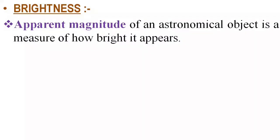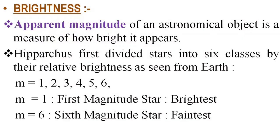A star might look bright because it is closer to us, and a really brighter star might appear faint because it is too far. We can estimate the apparent brightness of astronomical objects easily. But if we want to measure their real or intrinsic brightness, we must take their distance into account. The apparent brightness of a star is defined in terms of what is called the apparent magnitude of a star. In the second century BC, the Greek astronomer Hipparchus was the first to catalog stars visible to the naked eye. He divided stars into six classes or apparent magnitudes by their relative brightness as seen from Earth.